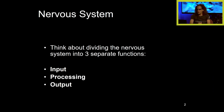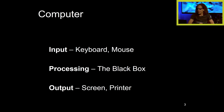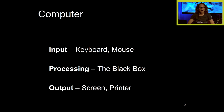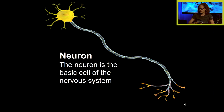The first thing we're going to look at is just the basic understanding of the nervous system. We want to think about dividing it into three separate functions: input, processing, and output. We can liken it to a computer — input is like a keyboard or mouse, processing is the black box where information is processed, and output would be the screen or printer. So I could print something out after the information has been processed, and that final product is the output.